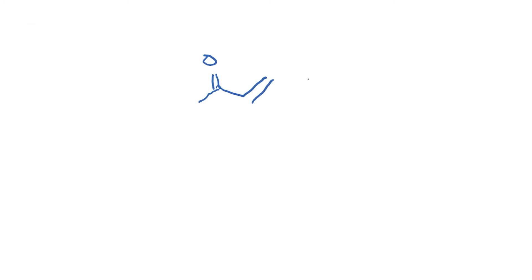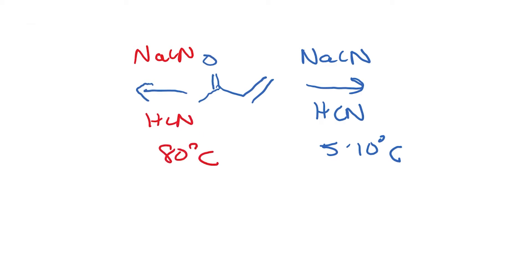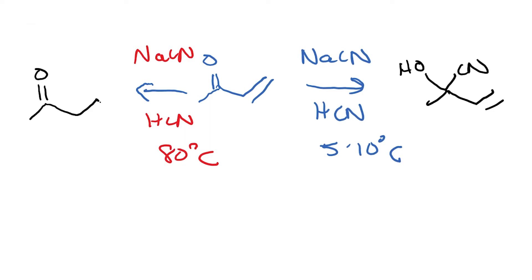Starting with this compound, when you add NaCN/HCN at somewhere between 5 and 10 degrees centigrade versus the similar reaction conditions — NaCN/HCN — but at 80 degrees centigrade, the product formed in the first case is the cyanohydrin, and the product formed in the second case is the addition to the olefin.